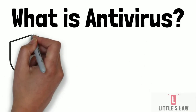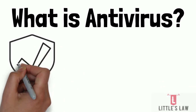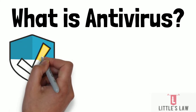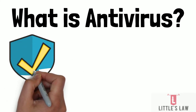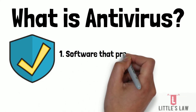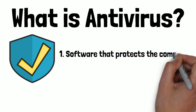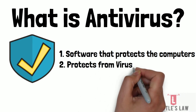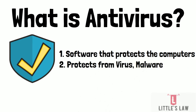When we hear about protection, we could think about antivirus. So what does an antivirus do, and what is the difference between the firewall and antivirus? An antivirus is a type of software that protects the computer from harmful viruses and malware from diverse sources.